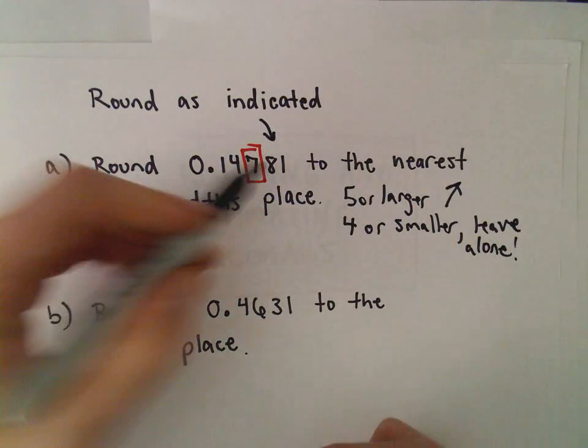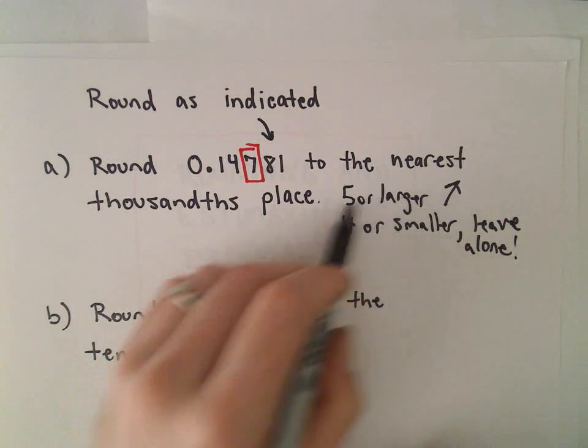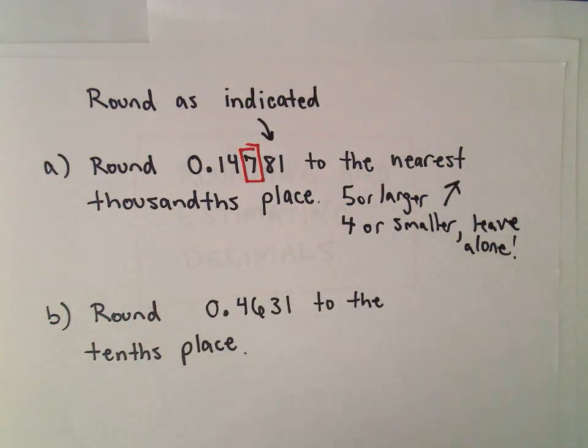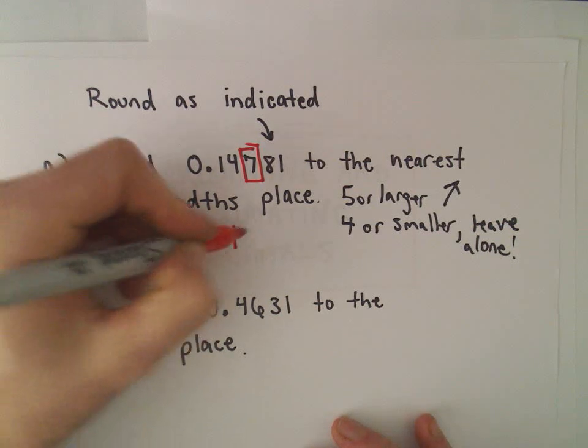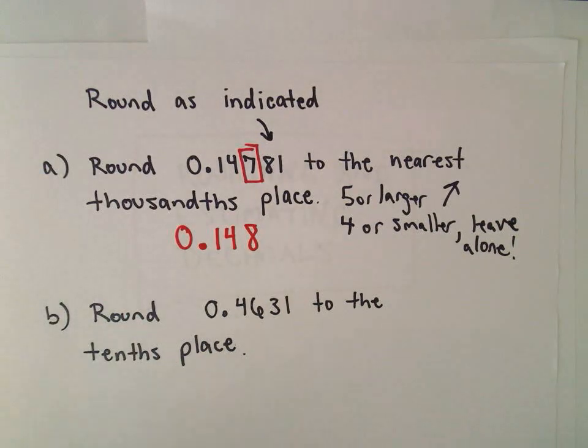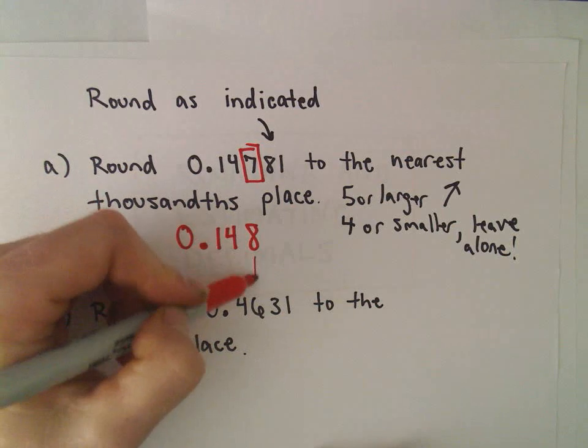In this case, 8 certainly falls into this situation where it's 5 or larger. So I'm going to round this. We would have 0.148, and now it's rounded to the nearest thousandths place.